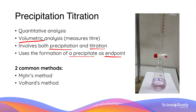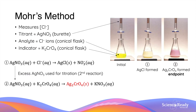The techniques are Mohr's method and Vohar's method. Mohr's method aims to quantify the concentration of chloride ions in a given solution. The method involves dispensing a solution of silver nitrate from the burette into the conical flask, which contains the chloride ions that we want to analyze. The conical flask also contains some amount of potassium chromate, which is the indicator of this titration.